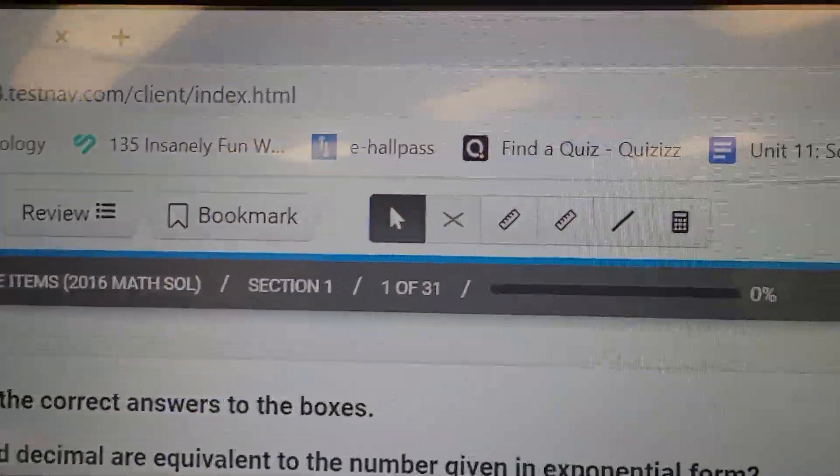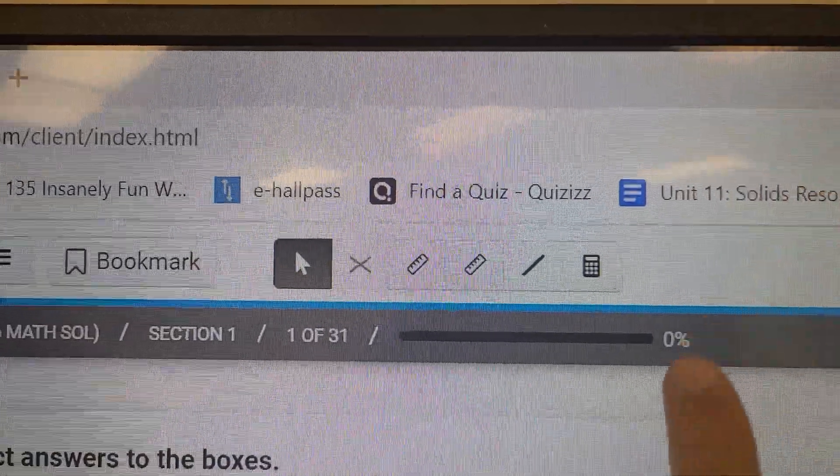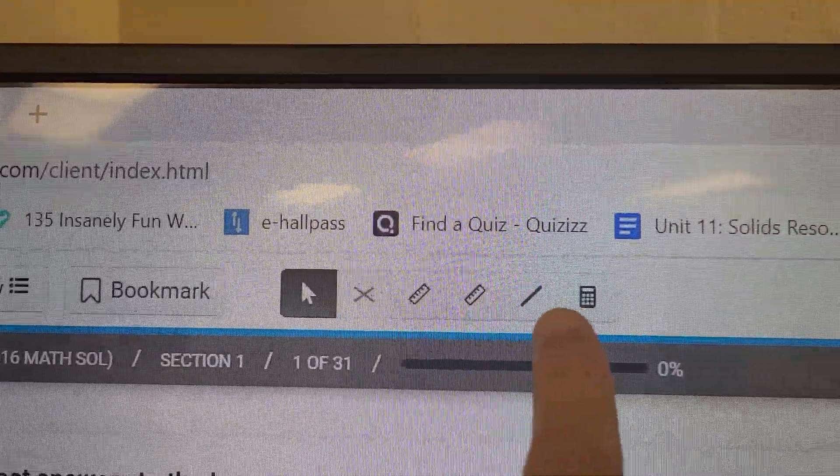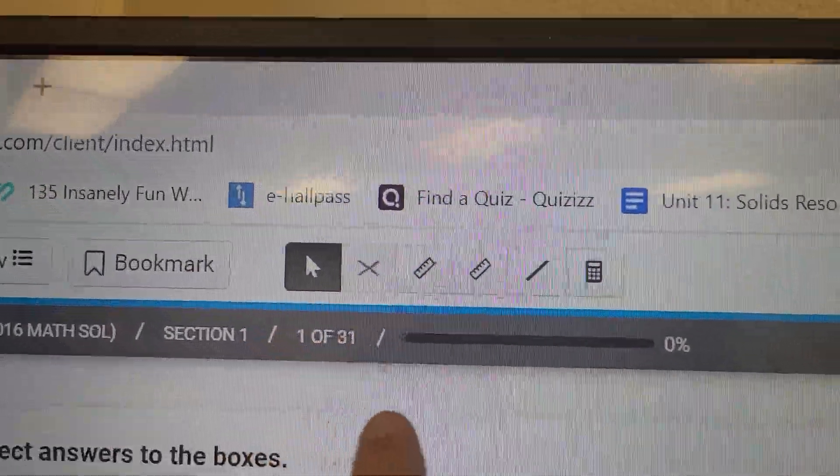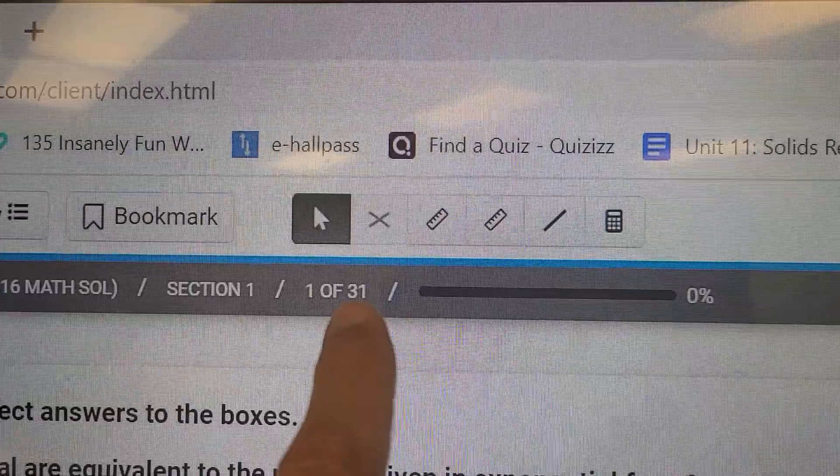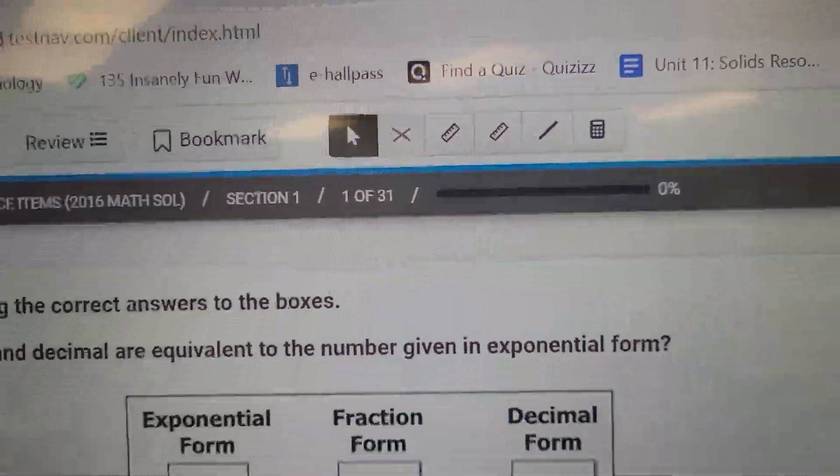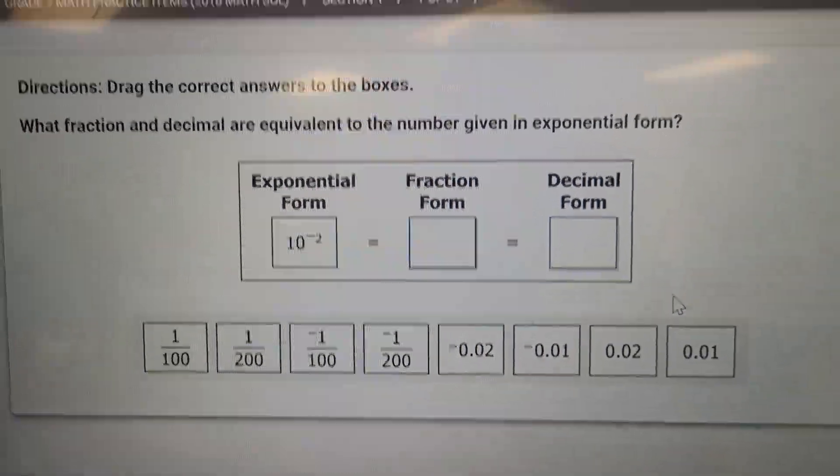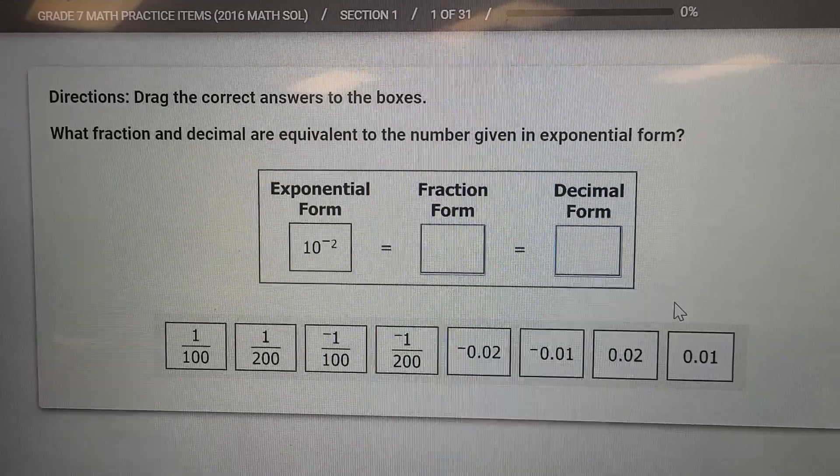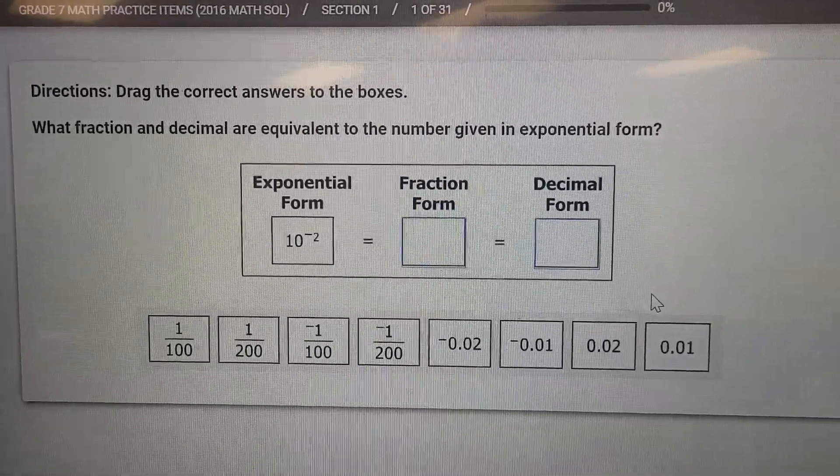Look at the toolbar up here. You'll see the calculator thing. There'll be one for the formula sheet too, rulers and stuff like that, just like the reading SOL. This is one of 31. There'll be more than 31 questions. Let's just look at this one together real quick.